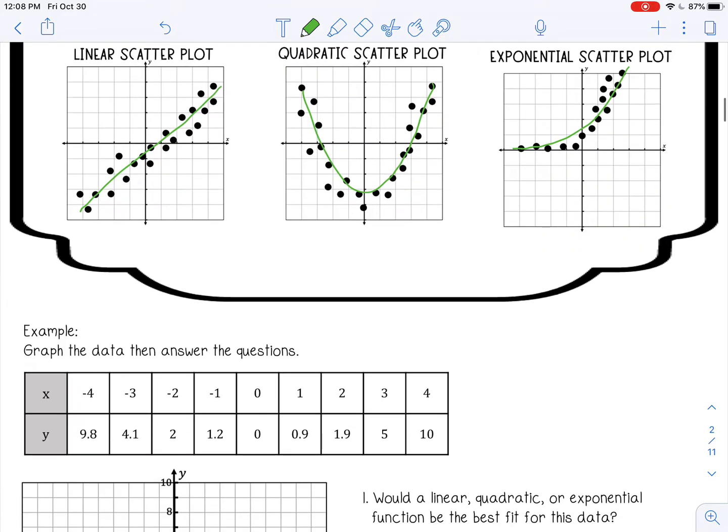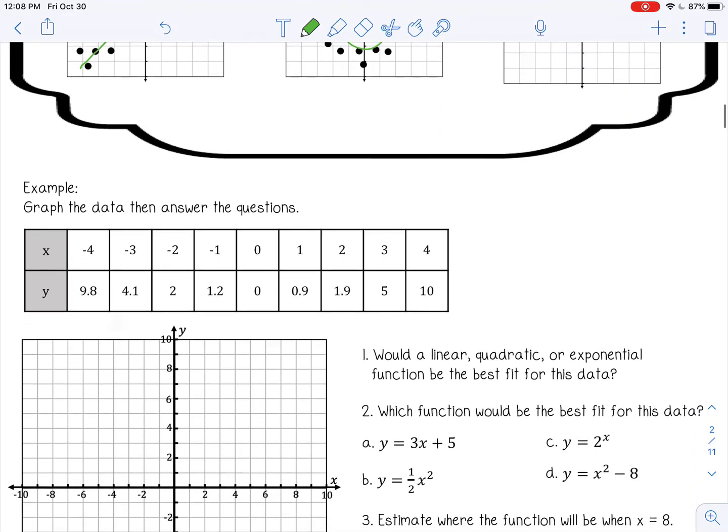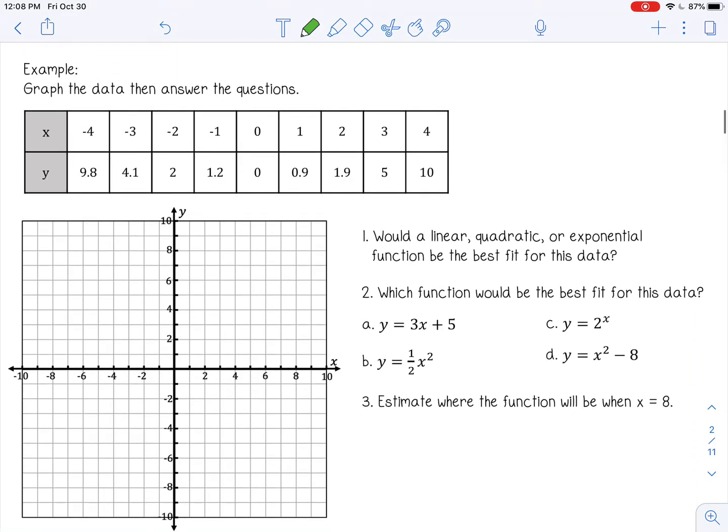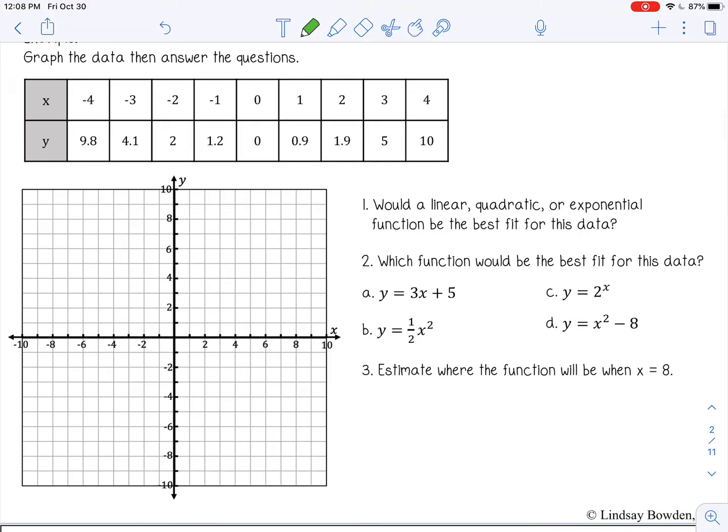So let's look at this graph of the data below. First of all, let's plot these points on our coordinate plane. So negative four, nine point eight, and just estimate these decimals. Negative two, two, negative one, one point two, zero, zero, one, zero point nine. So I'm just estimating where they go.